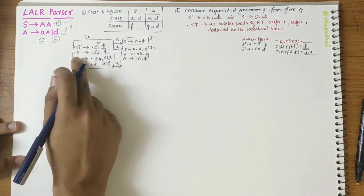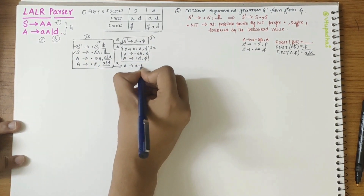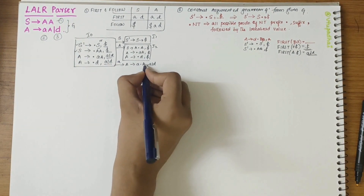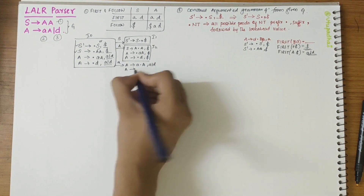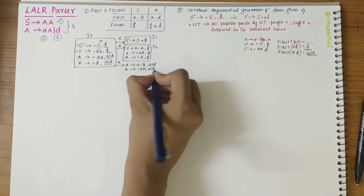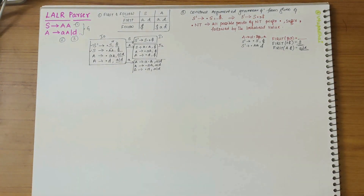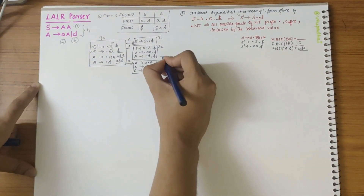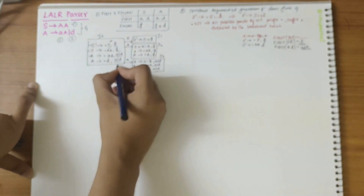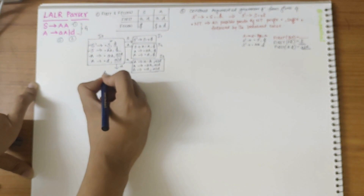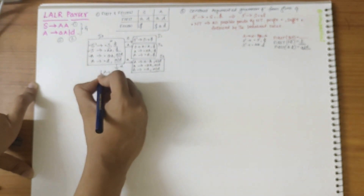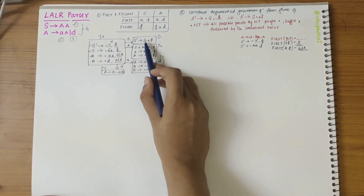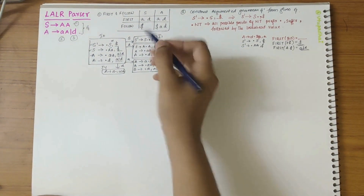Now over small a, I get A derives a dot A comma A/D. Writing again for A as a non-terminal, I get A derives dot AA comma A/D. This gives I3 items. Over D I can write A derives D dot comma A/D — the dot is at the end, so nothing needs to be shifted further. This is I4.